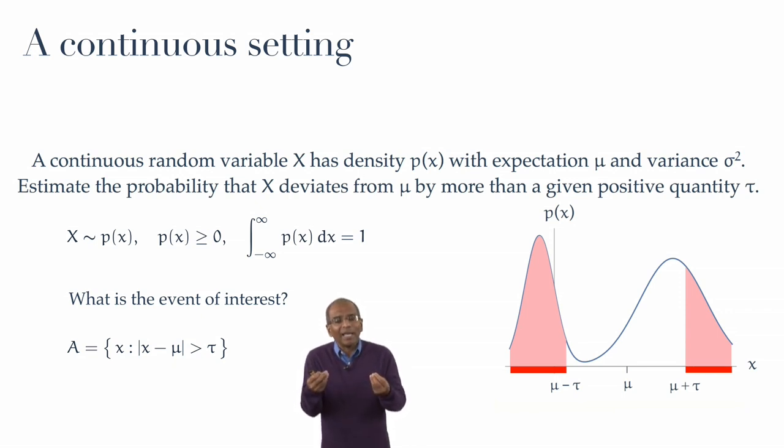And caulking an eye at our analysis of the binomial, we try to massage this into a slightly more convenient form. Take the inequality again, absolute value of x minus mu exceeding tau.